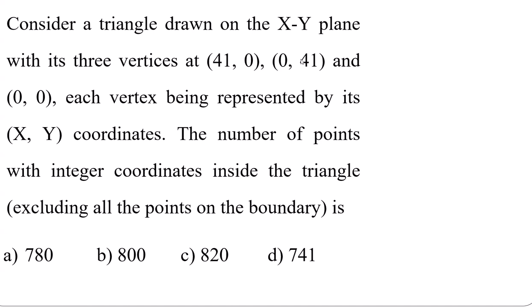So guys, you need a triangle using the points (41,0), (0,41), and the origin. After drawing that triangle, we need points with coordinates x and y. They're asking how many integer coordinates are there inside the triangle, excluding all the points on the boundary. Here again, we need to analyze. We cannot do this question directly as answers are more than 700. As we did in previous questions, we need to take some small numbers.